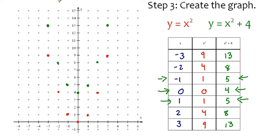Before we continue, let's stop and compare each red dot with each green dot. Notice that each of the green dots is exactly 4 units above the corresponding red dot.